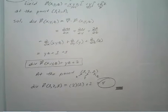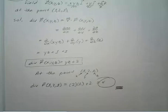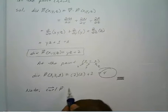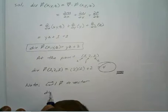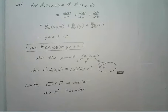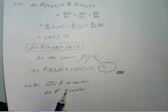Notice: the curl of a vector field gives you a vector, but the divergence of a vector field gives you a scalar value. Make a little note of it — curl equals a vector, and the divergence of that same vector field gives you a scalar value.